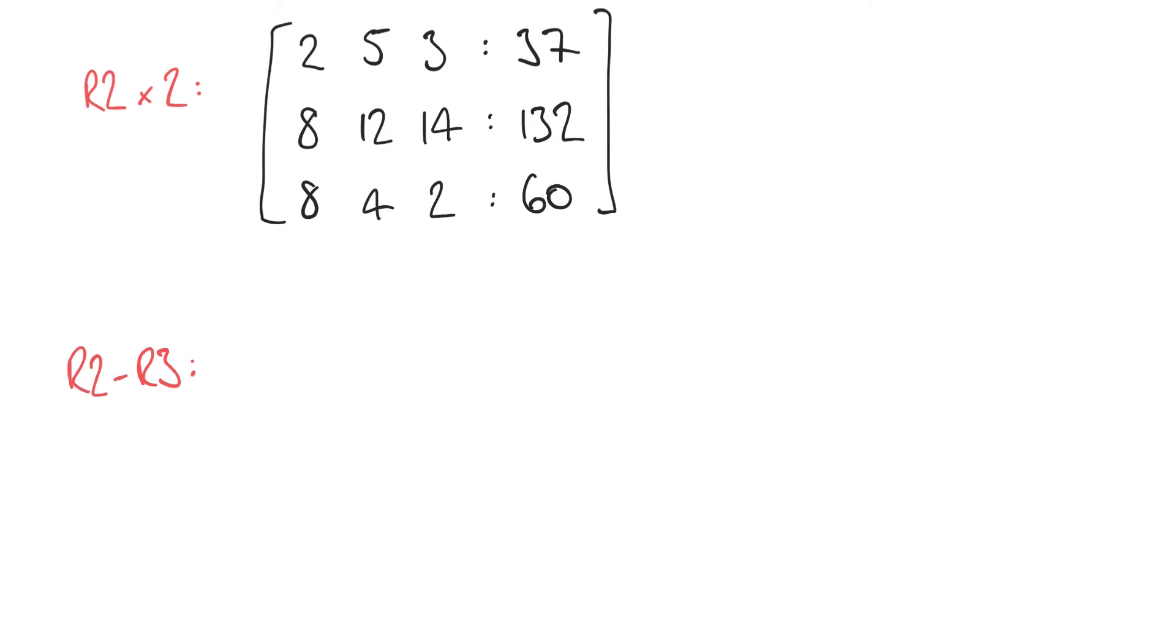And so what I'm going to be left with is 8 minus 8 is 0, 12 minus 4 leaves me with 8, 14 minus 2 leaves me with 12 and 132 minus 60 leaves me with 72. Now even though I've involved row 3 here I'm not changing row 3. Row 3 stays the same.